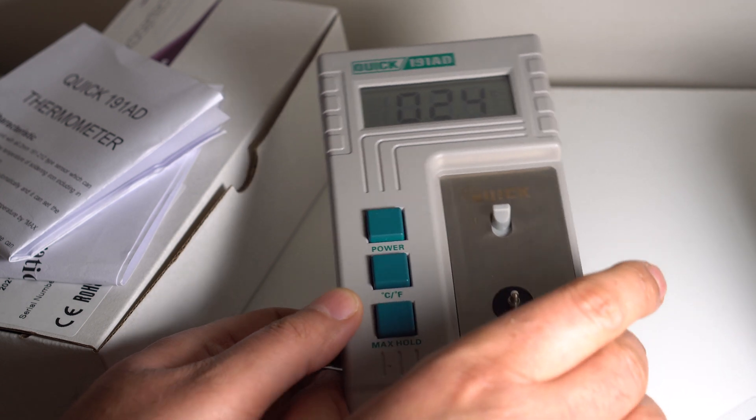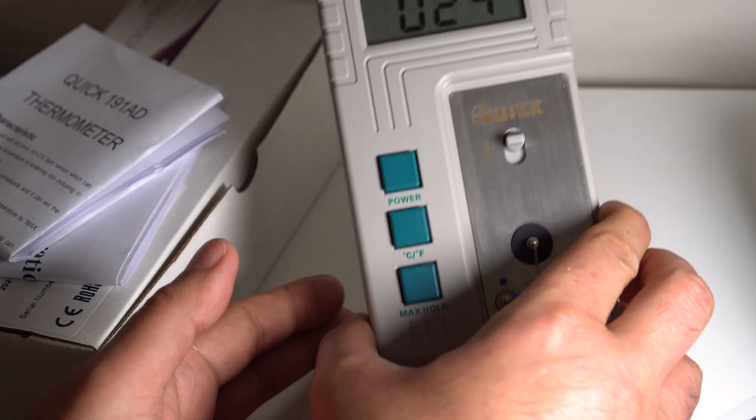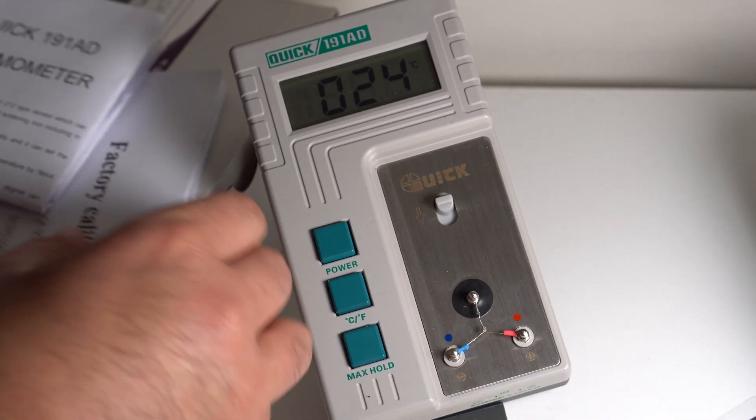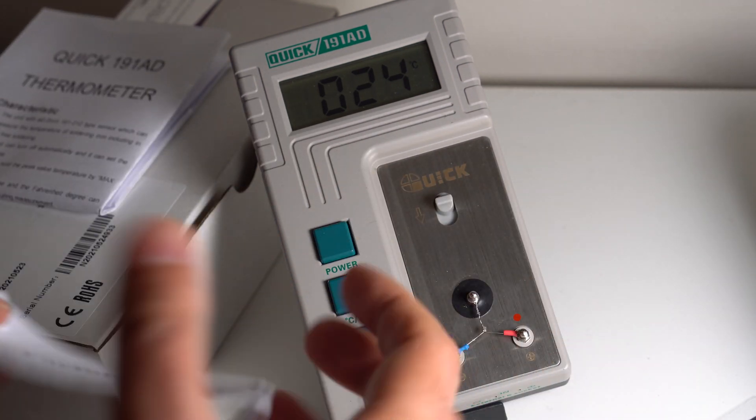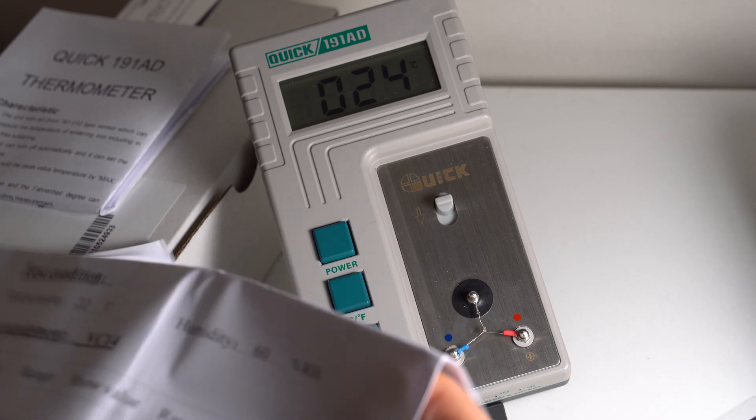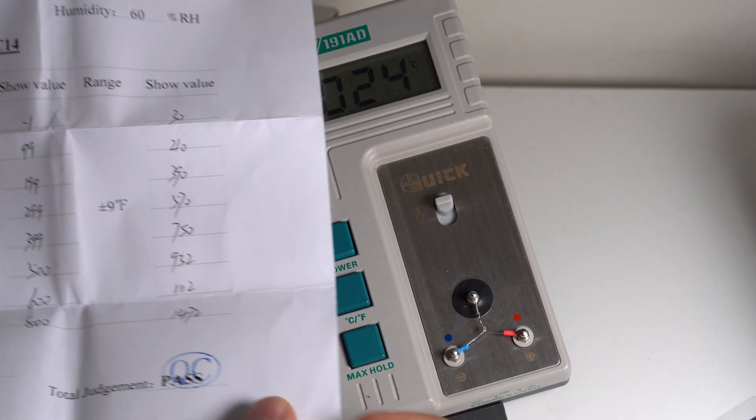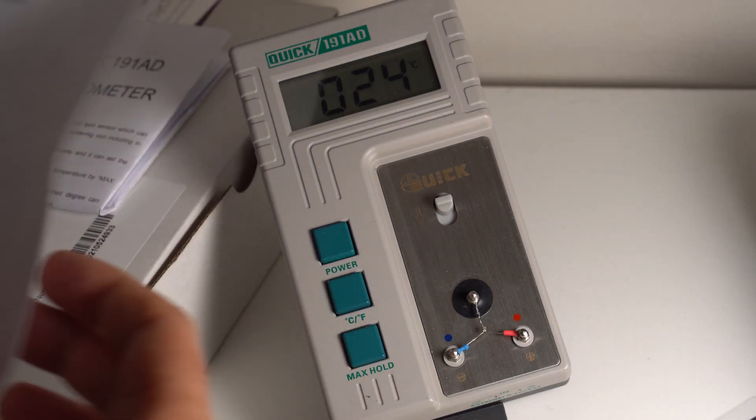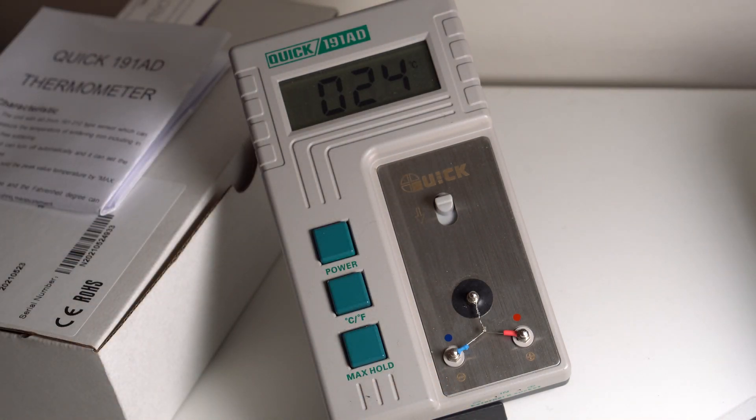In terms of functionality, it's quite basic. The granularity is 1 degree Celsius, and it also displays a 1 on the left-hand side if the thermocouple is disconnected. The measurement is switchable between degrees Celsius and Fahrenheit, and the max hold is pretty useful as well. The datasheet specifies operation between 0 and 800 degrees C, but actually it works from minus 13 to 973 degrees, which is an unusual range of values.